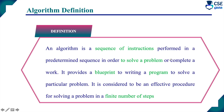First step: definition for an algorithm. An algorithm is a sequence of instructions, or step-by-step instructions, performed in a predefined sequence in order to solve any problem or complete the work. Simply put, it is a step-by-step procedure to solve any problem.